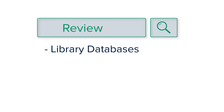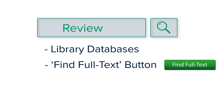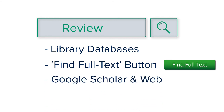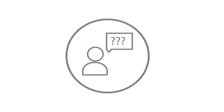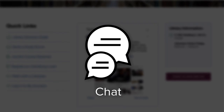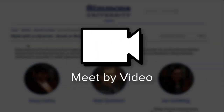To review, we covered how to find full text directly from the library databases using full text links. We also learned about getting full text with open access sources with the Find Full Text button. We then covered full text tips when using Google Scholar and Google Web, and we also learned how to work around quirks related to search systems. If you need any help, please reach out — chat, call, email, or meet by video.